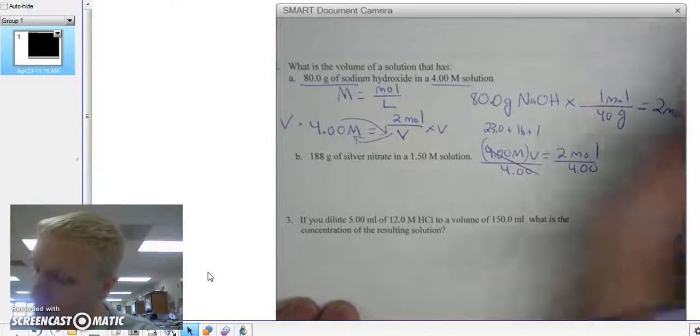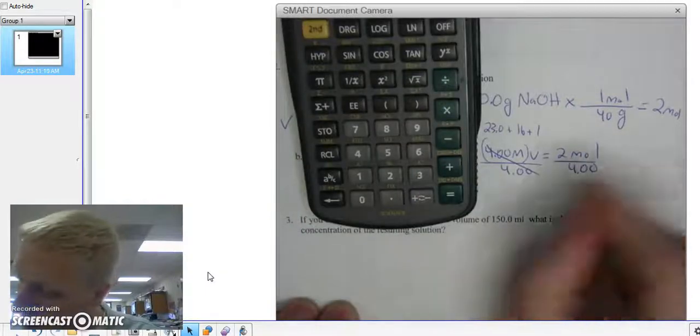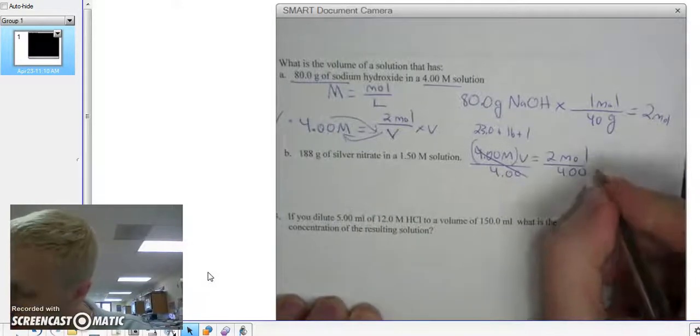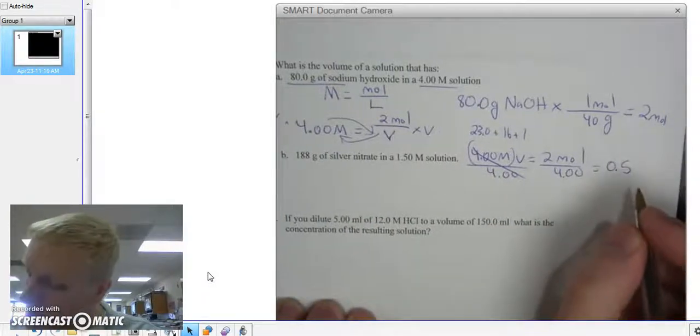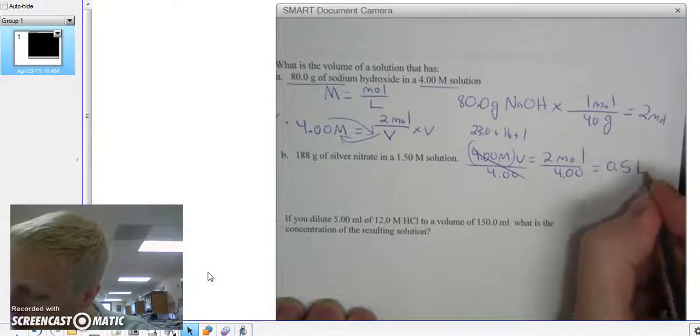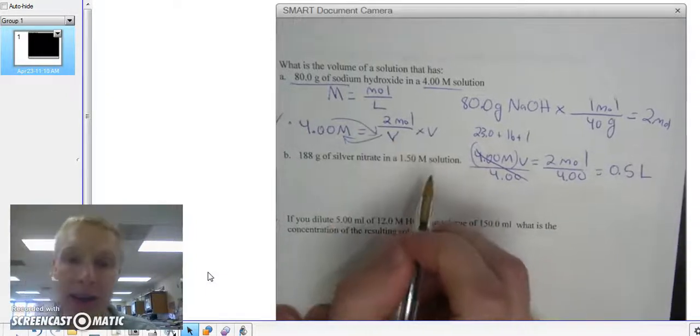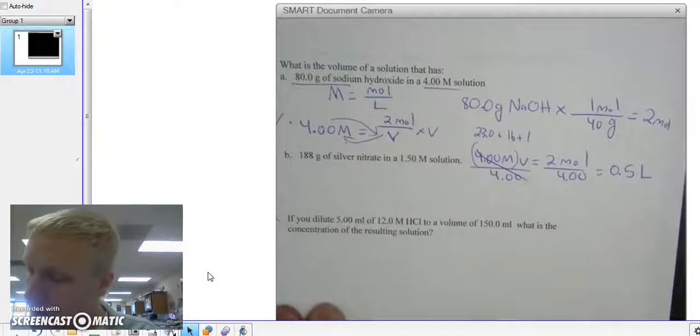4 cancels out. V equals 2 over 4. And that's 0.5 liters. And I know that's liters because volume is always going to be in liters.